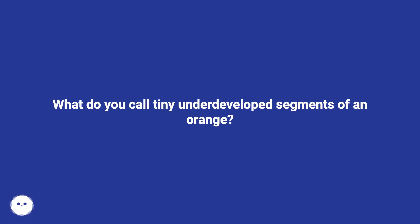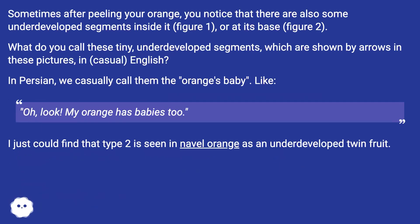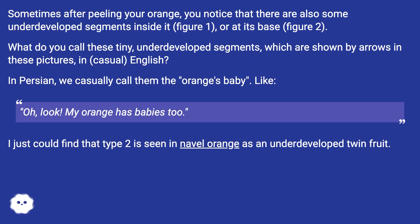What do you call tiny underdeveloped segments of an orange? Sometimes after peeling your orange, you notice that there are also some underdeveloped segments inside it, figure 1, or at its base, figure 2. What do you call these tiny, underdeveloped segments, which are shown by arrows in these pictures, in casual English?